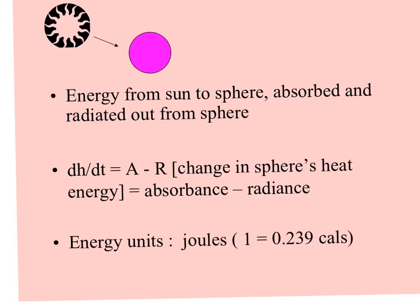When the sun shines on this sphere or organism, the heat is absorbed and radiated out from the sphere. So the change in the sphere's heat with respect to time is absorbance minus radiance of the amount of heat that passes through.